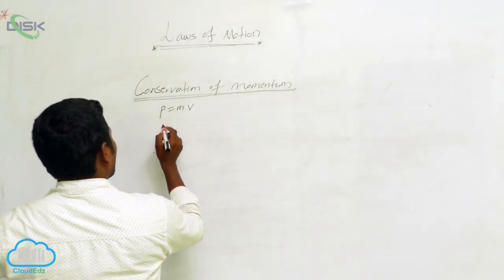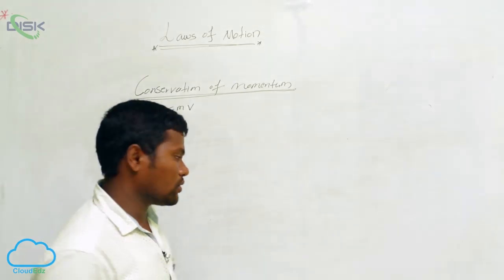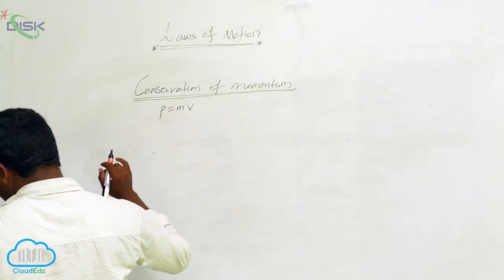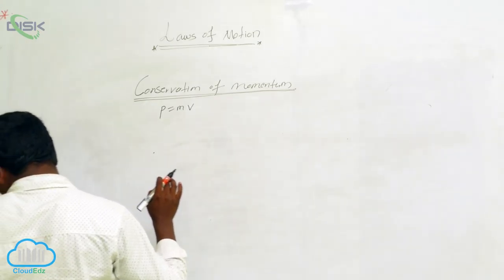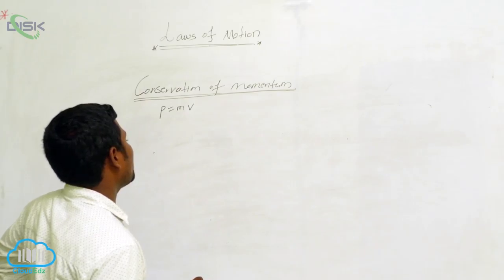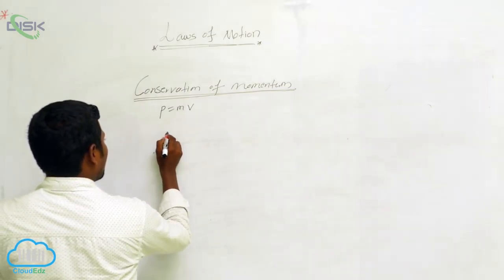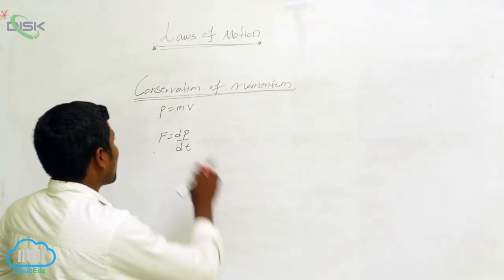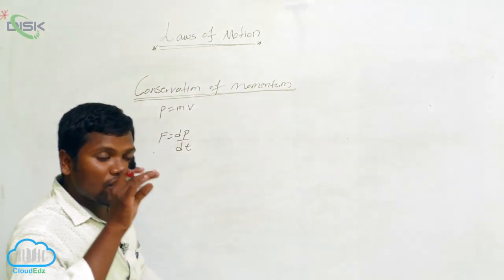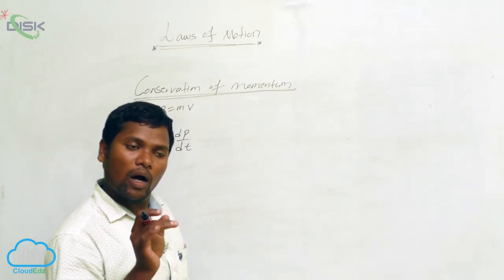Conservation of momentum: if there is no external force on the particle or on the body, then the total momentum of the particle will be constant. We can write F is equal to dp by dt. So if there is no external force on the body, then what happens to the conservation of momentum?